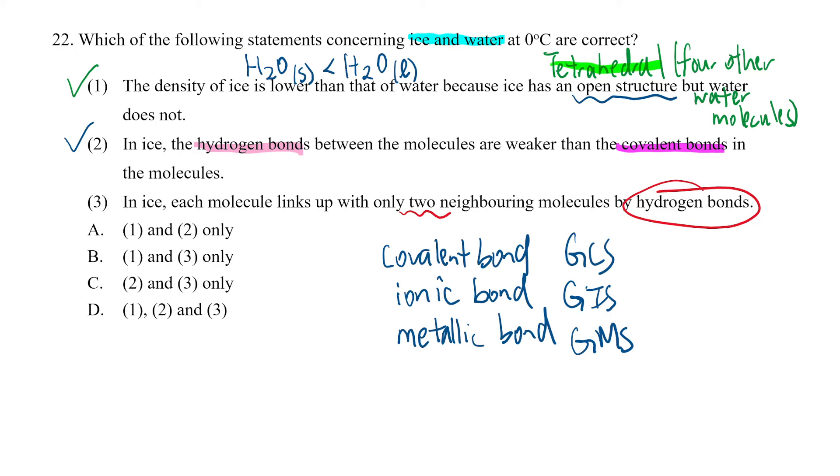As I mentioned earlier, in ice it's having a tetrahedral shape and it's bonded by hydrogen bonds to four other water molecules. So not two, but this should be four. So that's why this answer is wrong. The answer should be A.